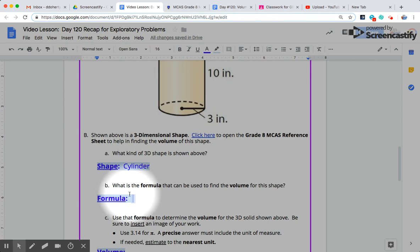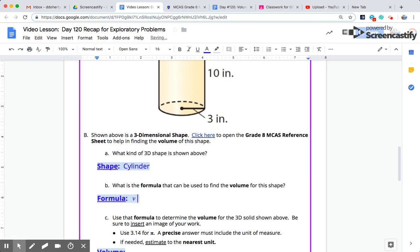And after you click insert equation, you'll be able to type in an equation, v equals pi, which is really just 3.14 times r squared times h.